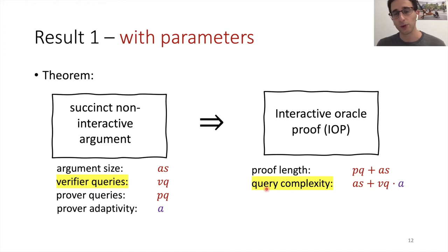The more important parameter is the query complexity. So we want this parameter to be small. This is AS. So the verifier would need to read AS. So we need to read the argument itself. So that's at least AS bits, or just one query if you consider a larger alphabet. Plus we need VQ times A. So for every query of the verifier to the random oracle, we need to read A bits from the proof.